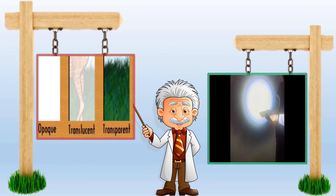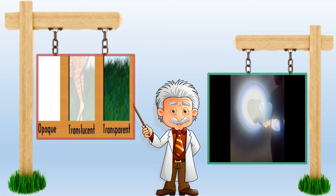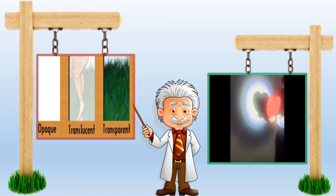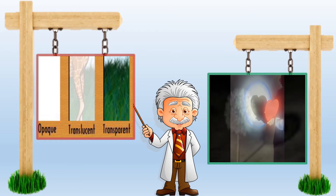Transparent materials allow all light to pass through them, so they can't make any shadow. Translucent materials allow some light to pass through them, so they make a grey shadow. Finally, opaque materials don't allow any light to pass through them, so they make a black shadow.